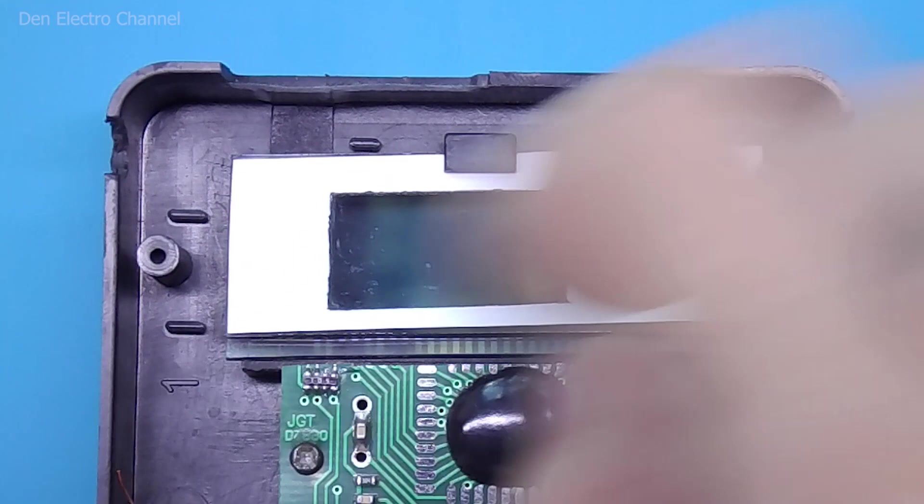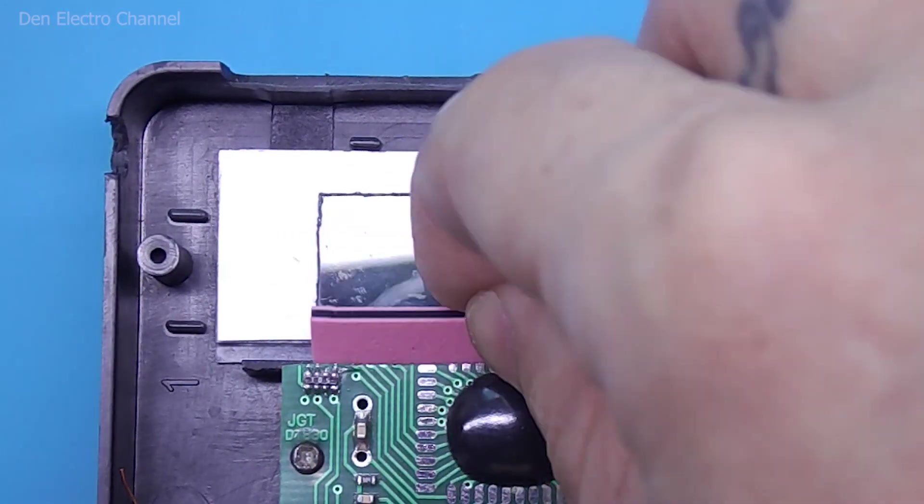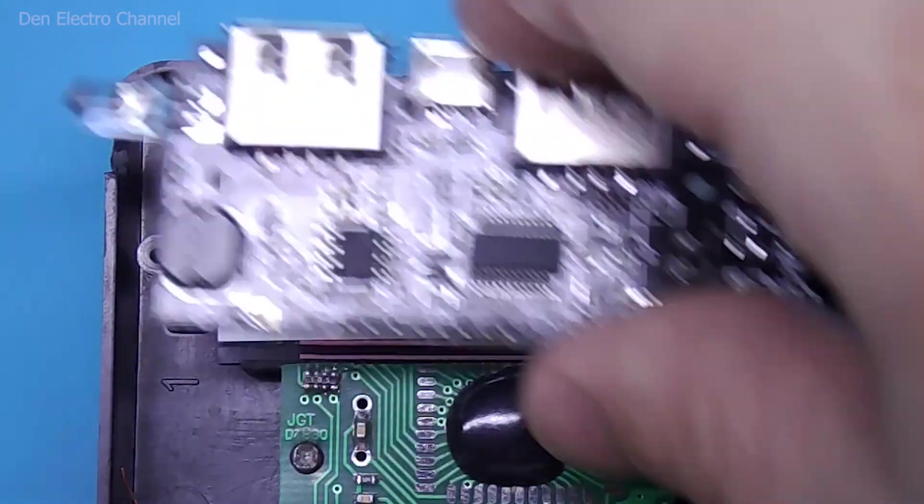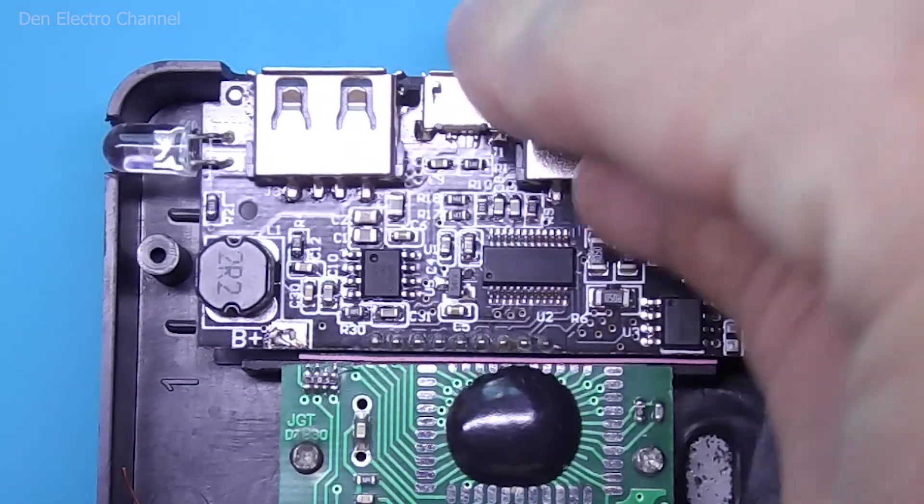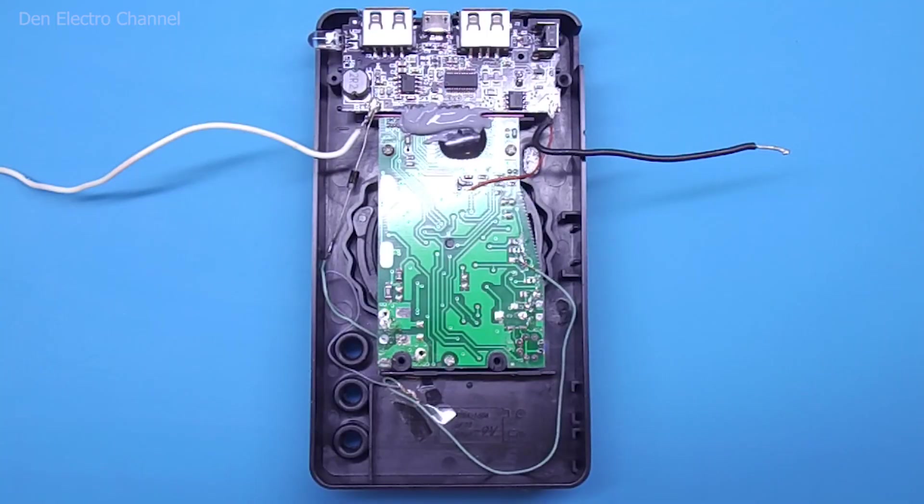Now I'm setting up the display. I put a conductive rubber band on it so that it supports the board from below. And I put the board on top. Then I connected all the wires.